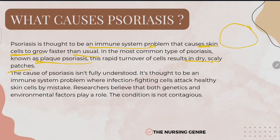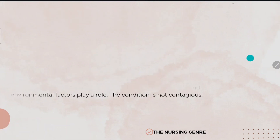The cause of psoriasis isn't fully understood. It is thought to be an immune system problem where infection-fighting cells attack healthy skin cells by mistake, making it an autoimmune disease. Researchers believe that both genetics and environmental factors play a role. The condition is not contagious — it is not a communicable disease.